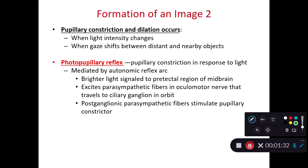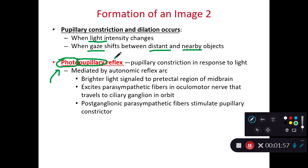Pupillary constriction and dilation is influenced by light intensity. Another thing that influences it is what we look at — as we look at things that are far away versus nearby, we change the opening of our pupil. The photopupillary reflex — photo referring to light, pupillary referring to the pupil, and reflex meaning it happens automatically — is constriction of the pupil in response to light, governed by an autonomic nervous system reflex arc.